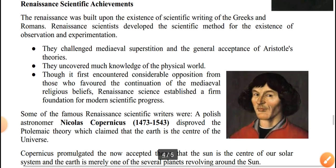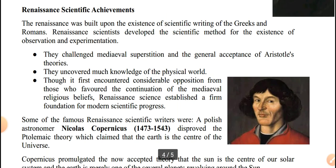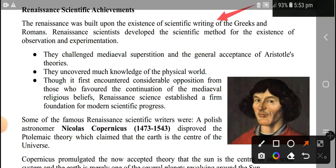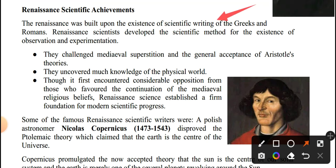The Renaissance was built on the scientific writings of the Greeks and Romans. The Renaissance developed the scientific method through observation and experimentation.